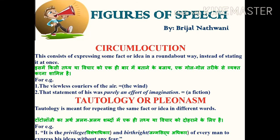The next figure of speech is circumlocution. This consists of expressing some fact or idea in a roundabout way instead of stating it directly. For example: 'The viewless couriers of the air.' Another example: 'That statement of his was purely an effort of imagination' — this indicates that his statement was merely fiction.